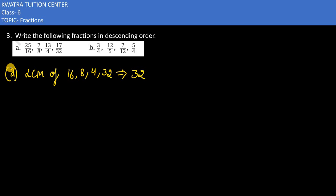Now here we have 25 by 16. What do we do? I need to make sure that 16 is 32. So which is 50 by 32. Second part is 7 by 8. And which is 8? I would be multiplying it with 4, and 7 into 4 is 28. 28 divided by 32 is there.